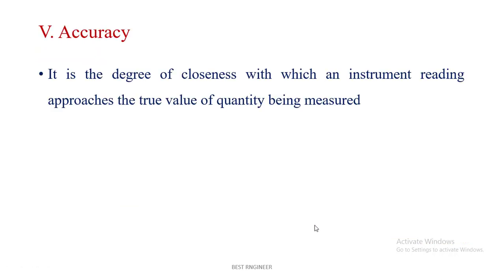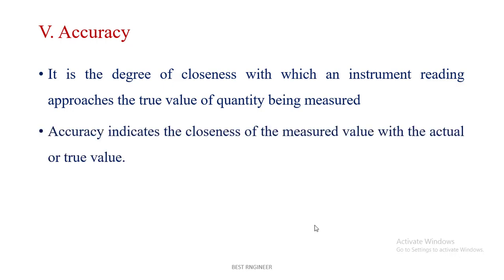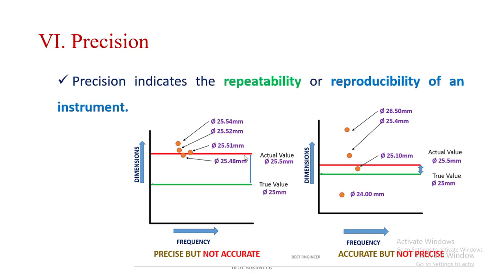Accuracy is the degree of closeness with which an instrument reading approaches the true value of the quantity being measured. Precision indicates the repeatability or reproducibility of an instrument. For example, if I want to make a component with a diameter of 25 mm but the actual measured value is 25.5 mm, and four components are all very close to each other, these are very precise but not accurate because there is a large error from the true value. So we can say: precise but not accurate.